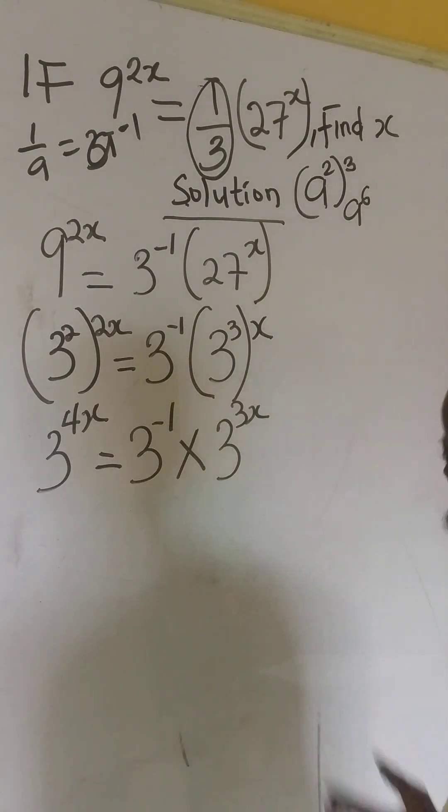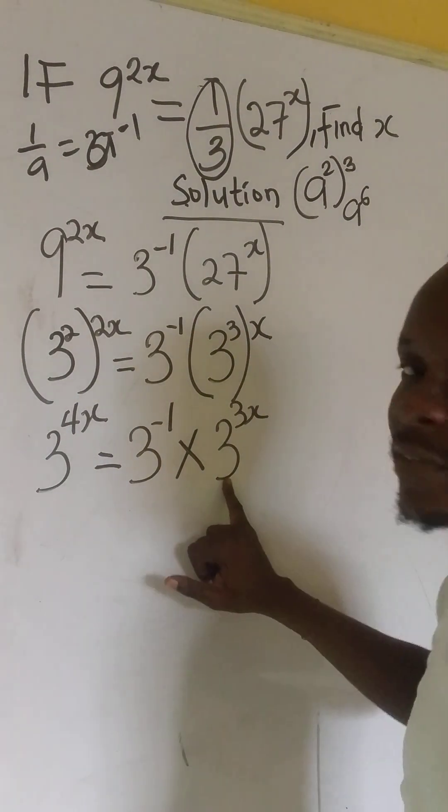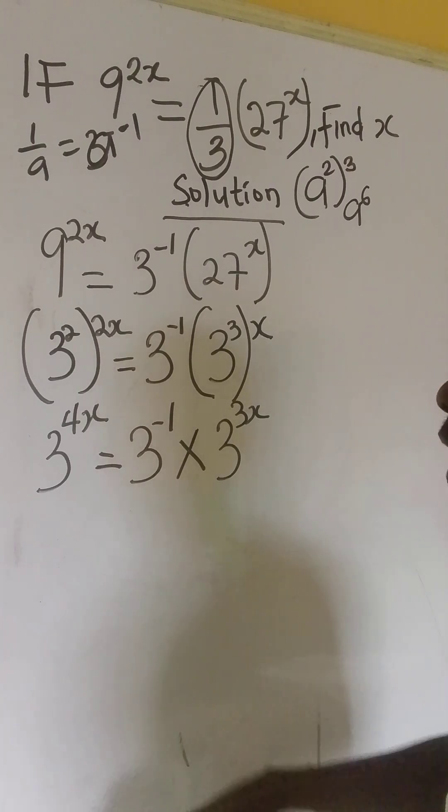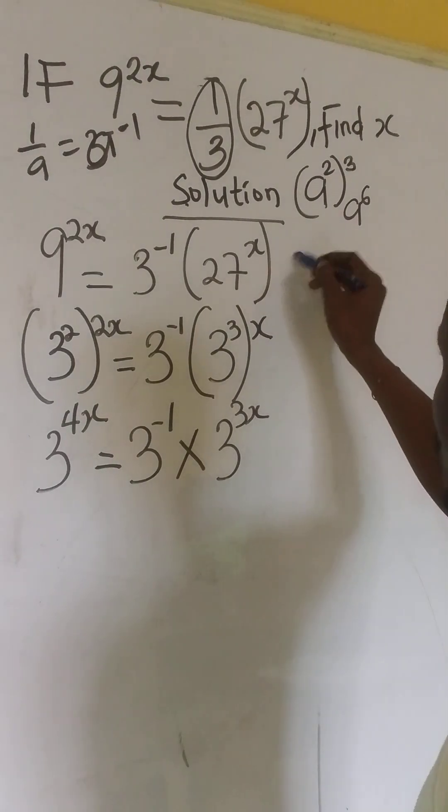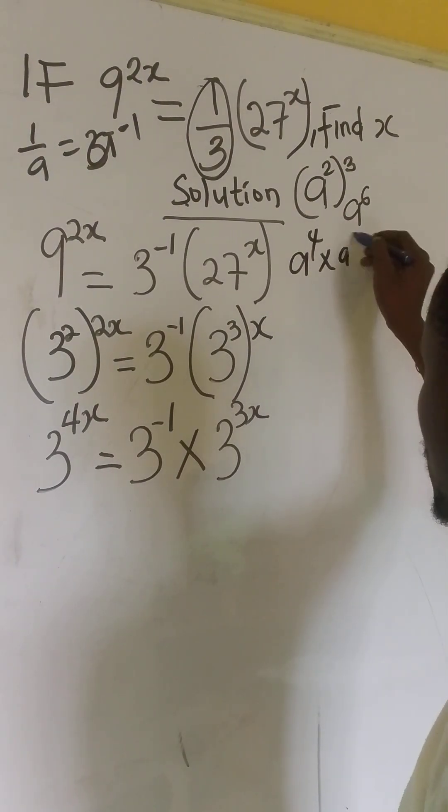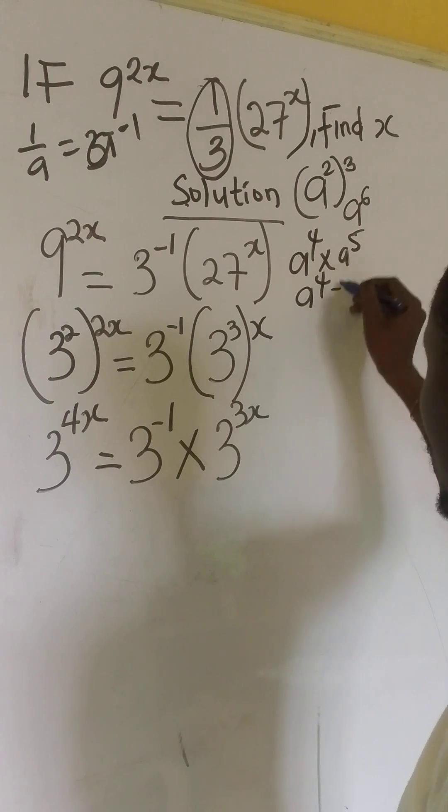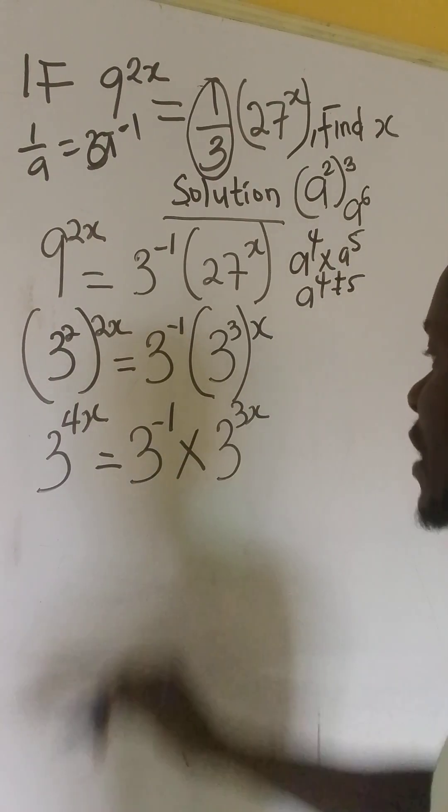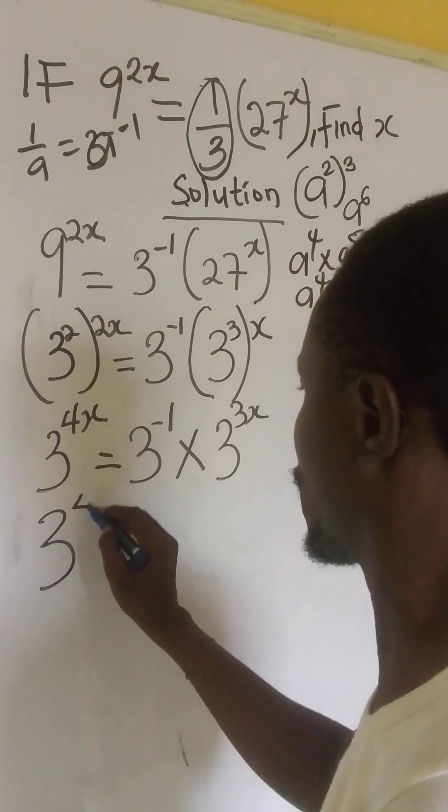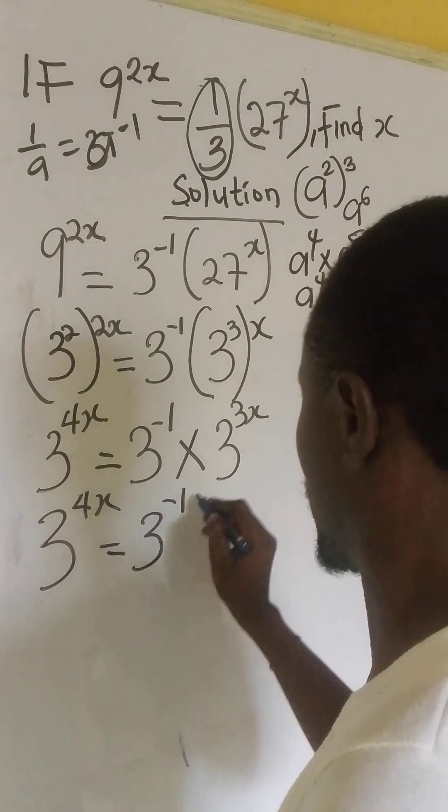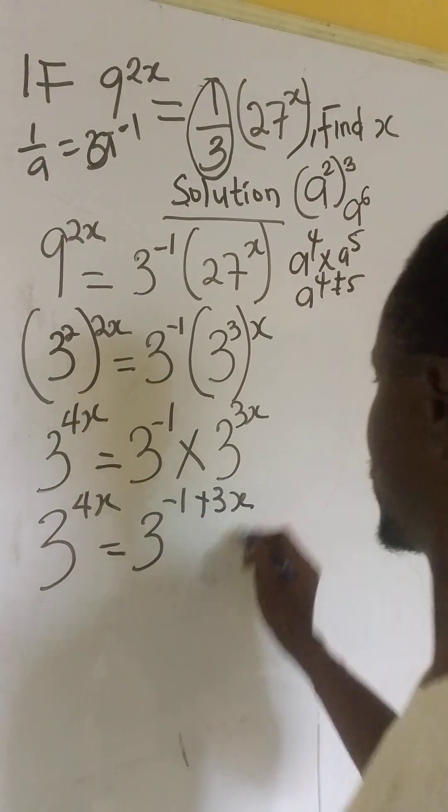Now, the next thing is this. These and these are the same bases. So, we can apply the law of addition. If you have a raise to power of 4 times a raise to power of 5, it becomes a raise to power of 4 plus 5. So, we apply that here. We now have 3 to the power of 4x equals to 3 to the power of minus 1 plus 3x.